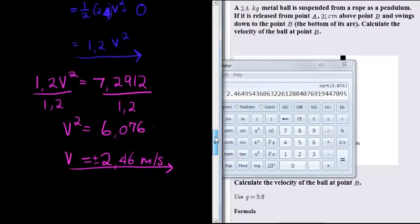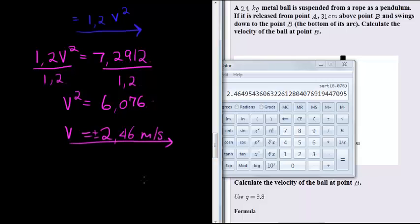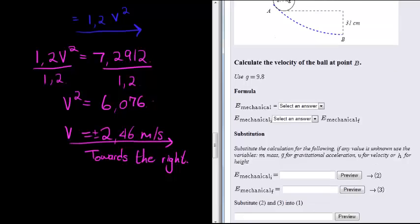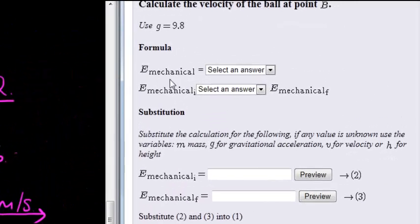Towards the right, so at other points might not have the exact direction, but when it's at the bottom we know that it's traveling towards the right. So this velocity is towards the right, and that's it.